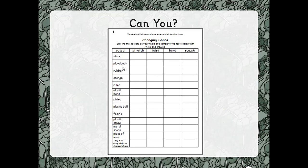So if you can find the following objects, you'll need to pause the video now while you go on a little object hunt. You need to find a stone or a pebble, play-doh or some plasticine, a rubber, an eraser, something made of sponge, a ruler, an elastic band or maybe a hair scrunchie, a piece of string or maybe wool, a plastic ball, some fabric, a plastic straw, a metal spoon or metal object, and something made from wood.